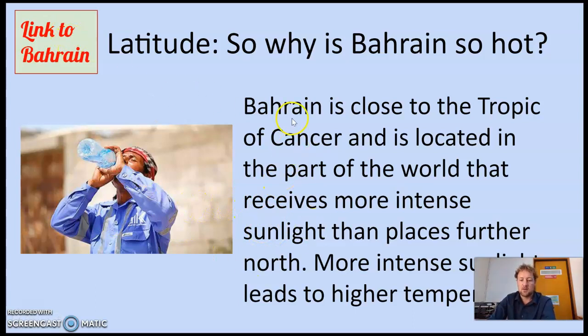So this links to Bahrain. So Bahrain is close to the Tropic of Cancer and is located in the part of the world that receives more intense sunlight than places further north. More intense sunlight leads to higher temperatures. I'm only going to go through that one. I'm going to hand it over to you to make your notes now. Now, we will be going through this again and working towards your assessment in the next week and in the week after half term. So you are trying to explain these factors in your own notes. So good luck.